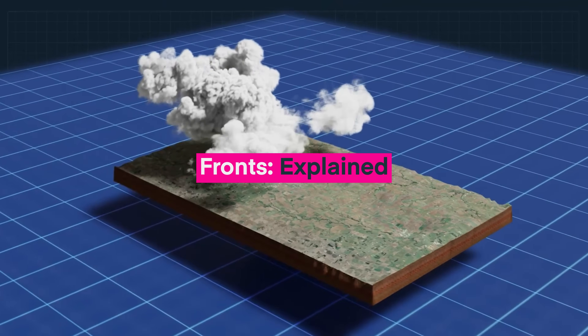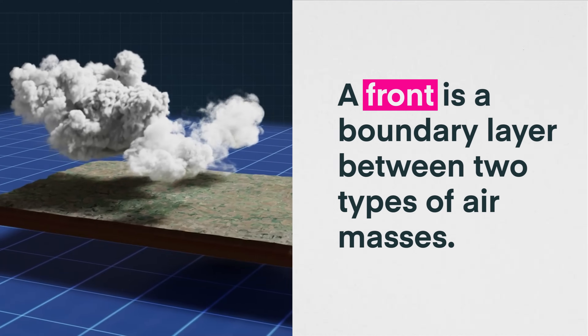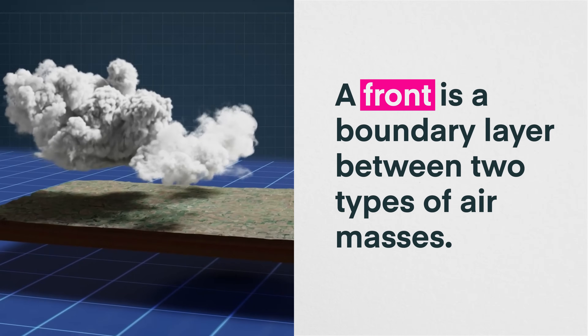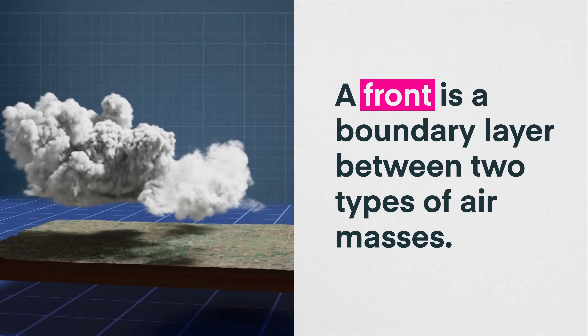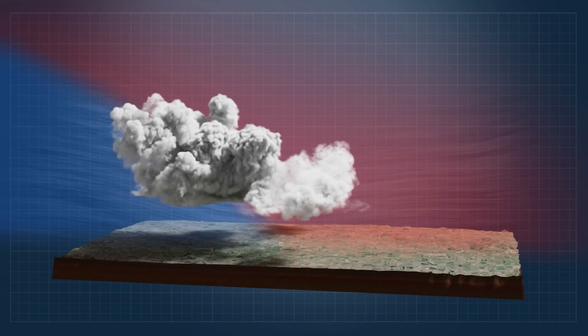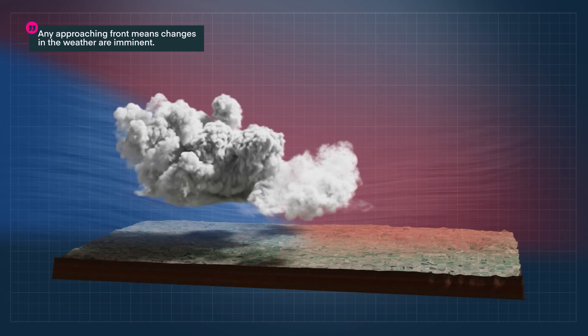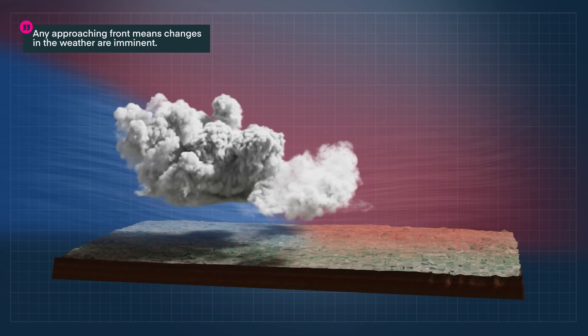Today we're talking about fronts in aviation. To put it simply, a front is a boundary layer between two types of air masses. For pilots, you need to be paying attention because any approaching front means that there is going to be a change in the weather.